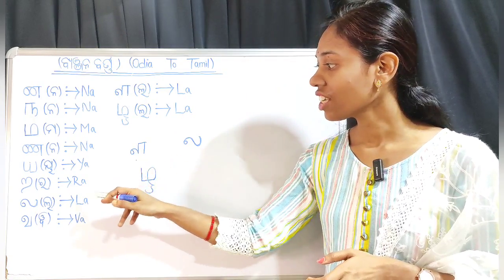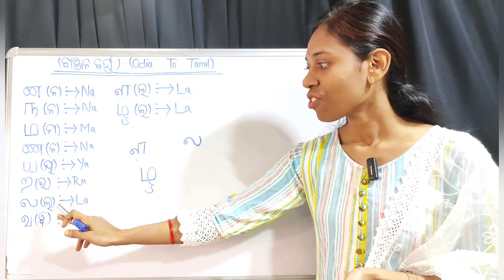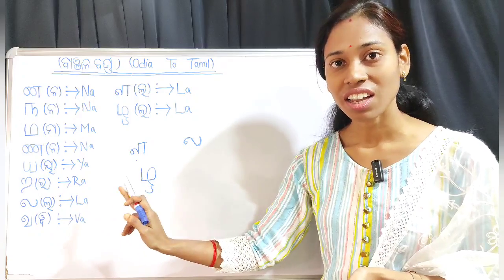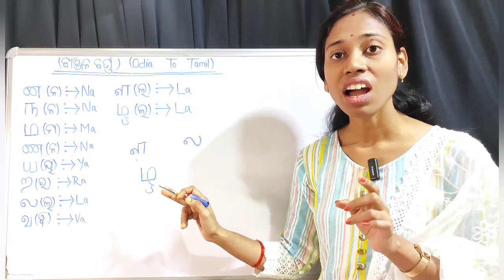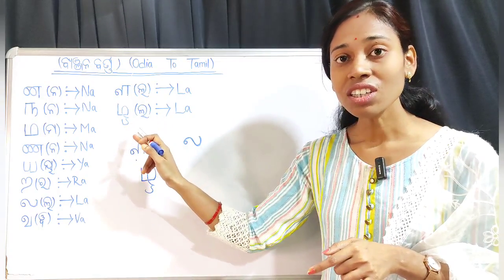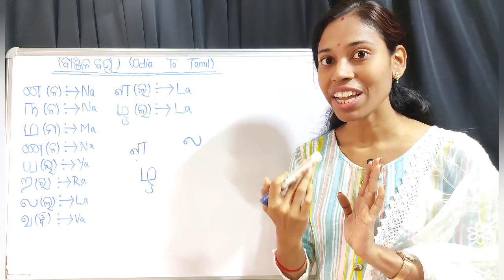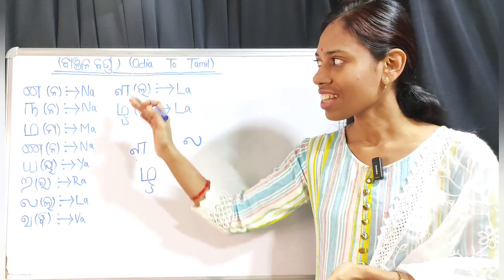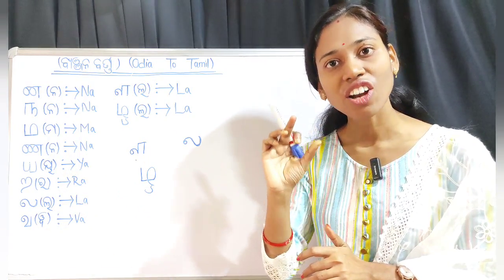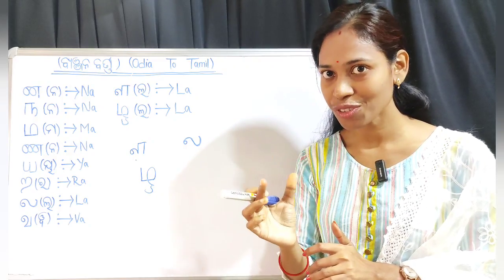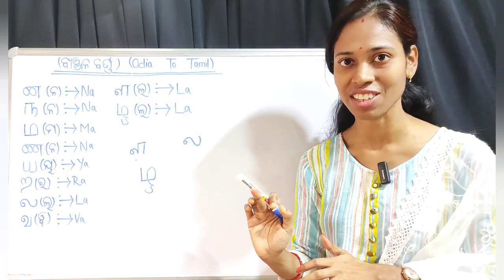Friends, what is the difference between these three different forms? The pronunciation is different. First, the language form is the same but the pronunciation is smooth. Second, the language is the same. Third, the language is the same — the same form. Because the pronunciation is the same, the language and the pronunciation are the same, but it is also different.